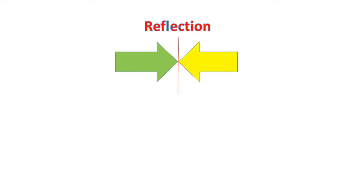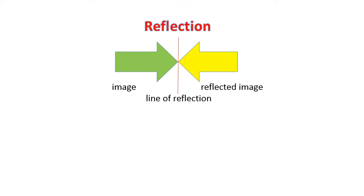Now we will be learning the first transformation, that is reflection. Reflection is a type of transformation where the transformed image is flipped over the line of reflection. We can see here an image is given, and this image is reflected over the line of reflection, and the reflected image can also be seen.